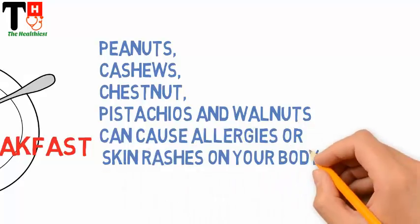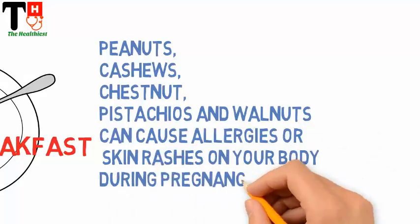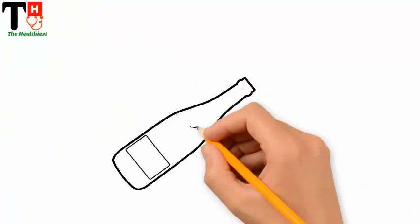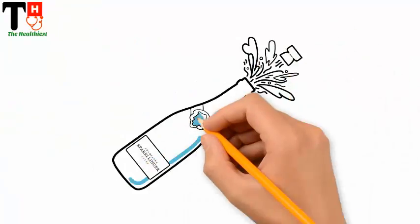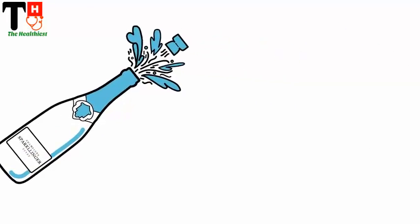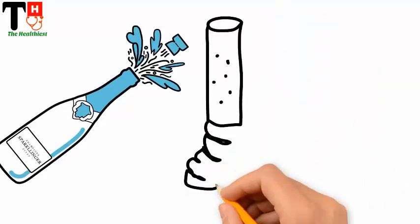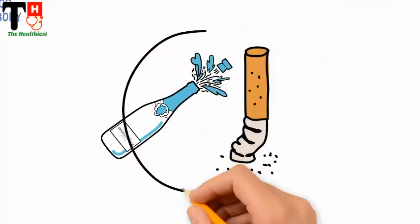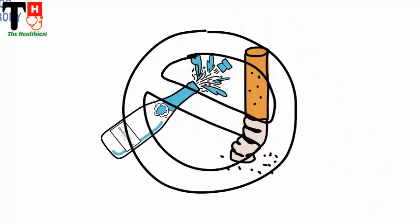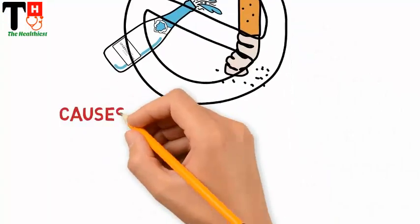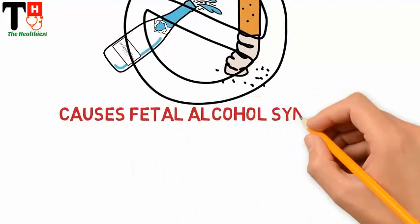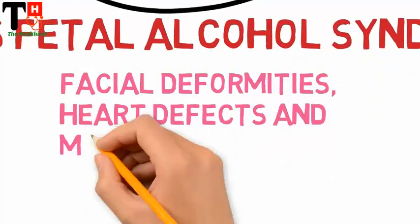Pregnant women are advised to completely avoid drinking alcohol and smoking as it increases the risk of miscarriage and stillbirth. Even a small amount can negatively impact your baby's brain development. It can also cause fetal alcohol syndrome, which involves facial deformities, heart defects, and mental retardation.